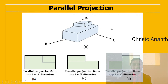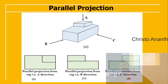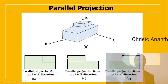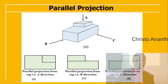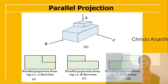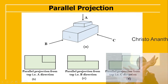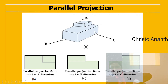For parallel projection, we have views from three directions: A is the top view, B is the side view, and C is another side direction. From the top view, you see only the top surface; from the side view, you see only what faces that side. This is similar to engineering graphics, where each view reveals only the surfaces visible from that direction.